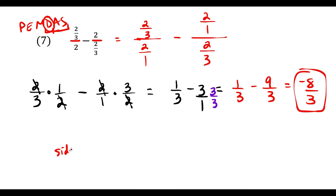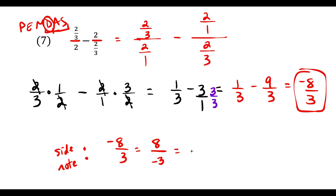A quick side note: fractions can be annoying all the way up to calculus. The expression negative 8/3 is the same as 8 over negative 3, which is the same as negative 8/3. All three representations are acceptable.